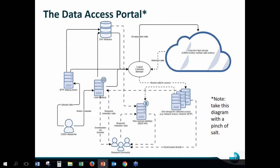The data access portal itself is not really just one system — it's a few systems that play together nicely. With our CSIRO researcher, they're entering metadata into the user interface and uploading their data to an SFTP staging server, which is fairly straightforward. Most researchers get that done without ever asking for help. There's a database that stores the metadata and also assesses the data files that come in, recording some metadata about the files as well.